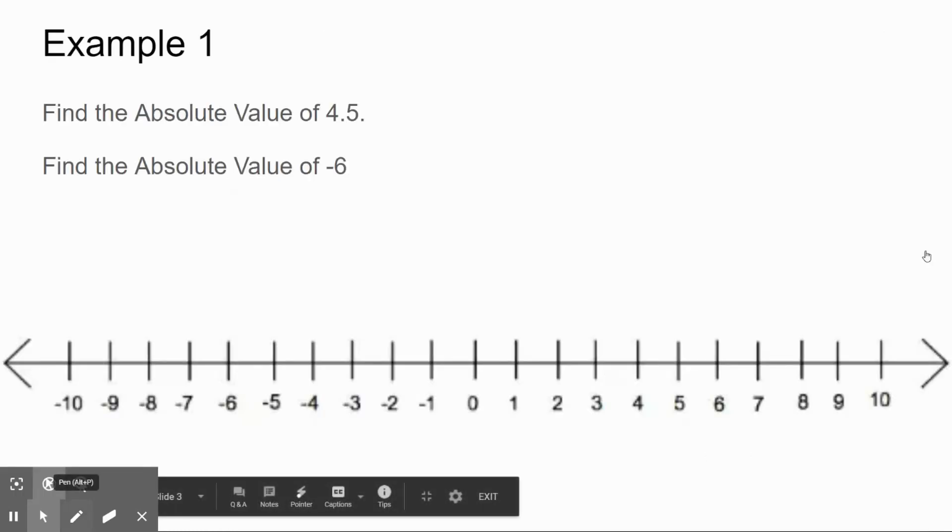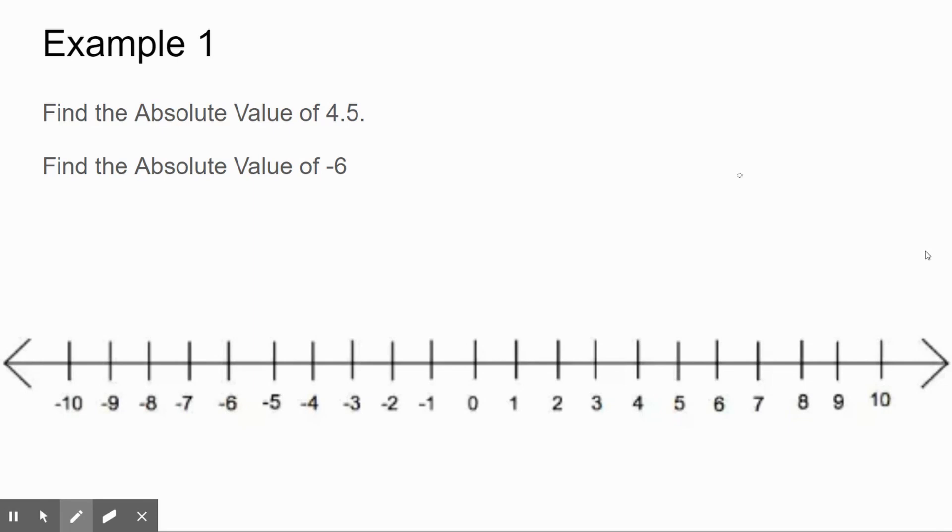Let's actually practice finding some absolute values. So we know that it's the distance between the value and zero. If we want to find the absolute value of 4.5, and you'll notice I'm actually going to make these absolute value lines a little bit longer, that way it doesn't look like it says 14.5.